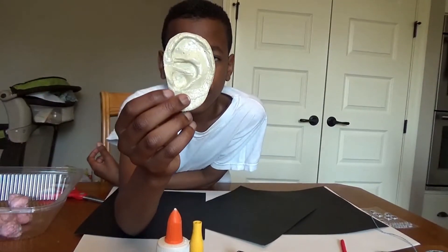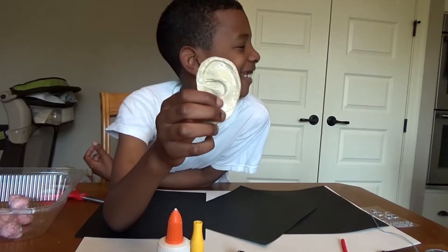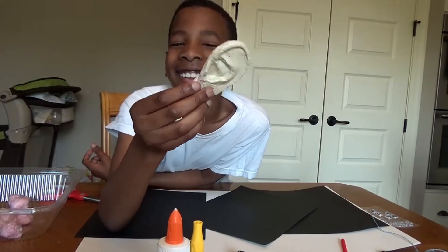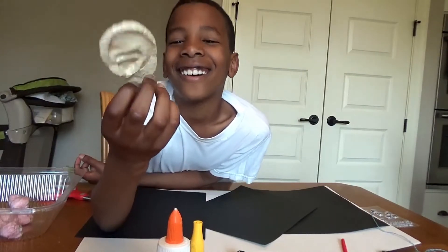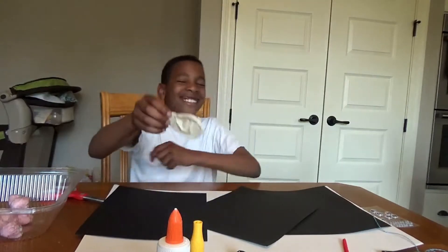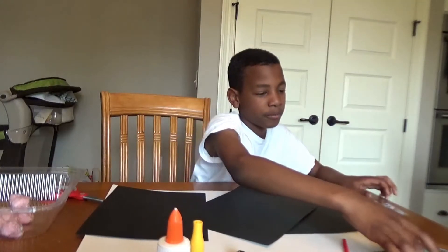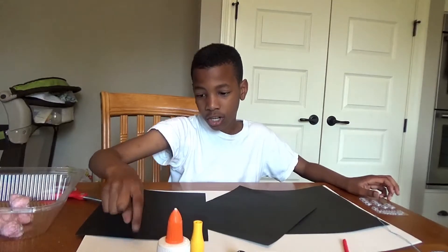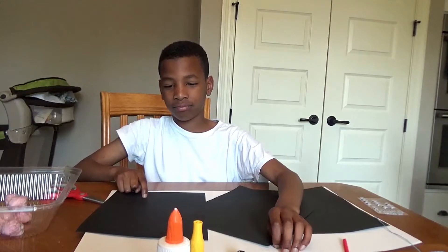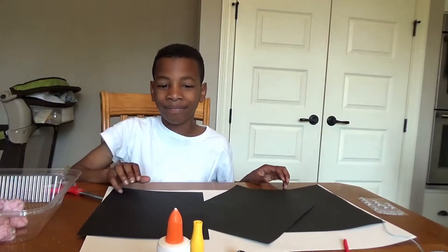My ear. She made it with play-doh - she put it on my ear and then she froze it. We also have some googly eyes, black paper, cardboard, and a hot glue gun. Here we go.